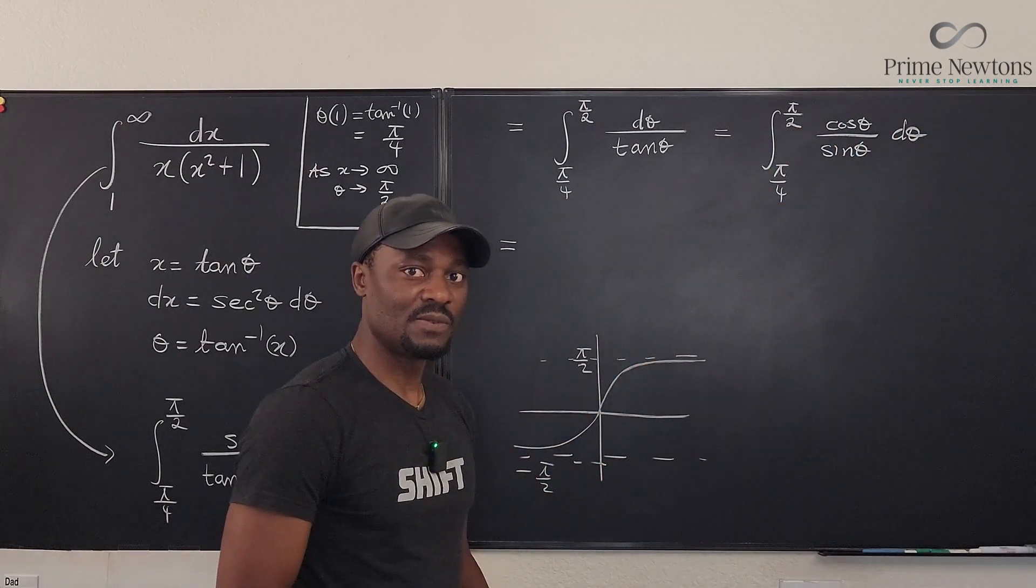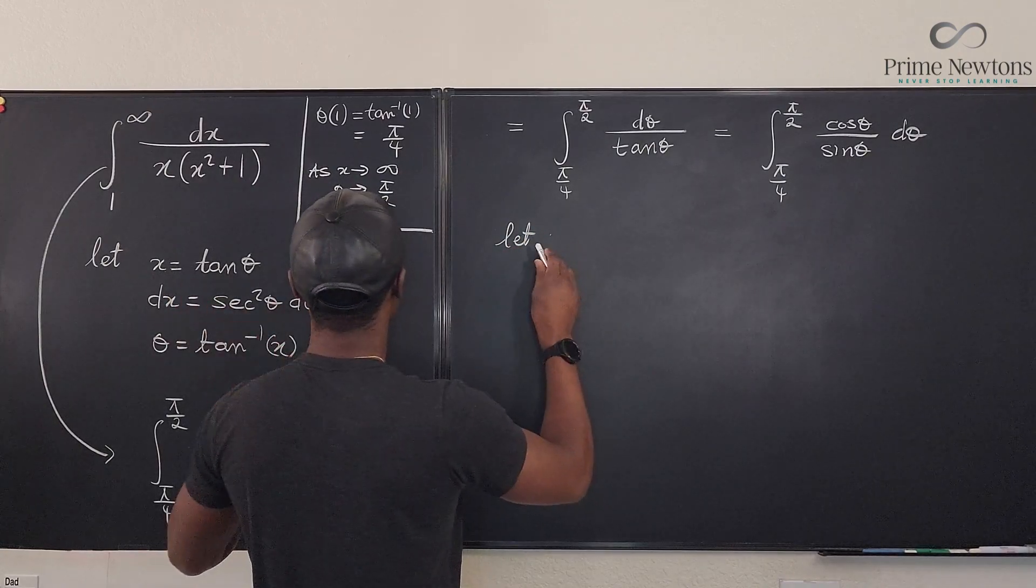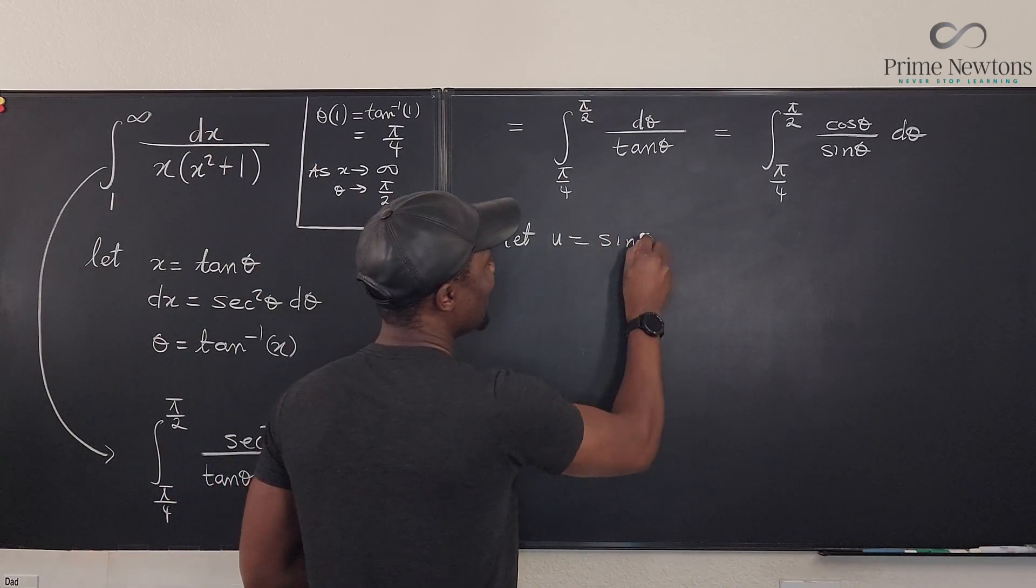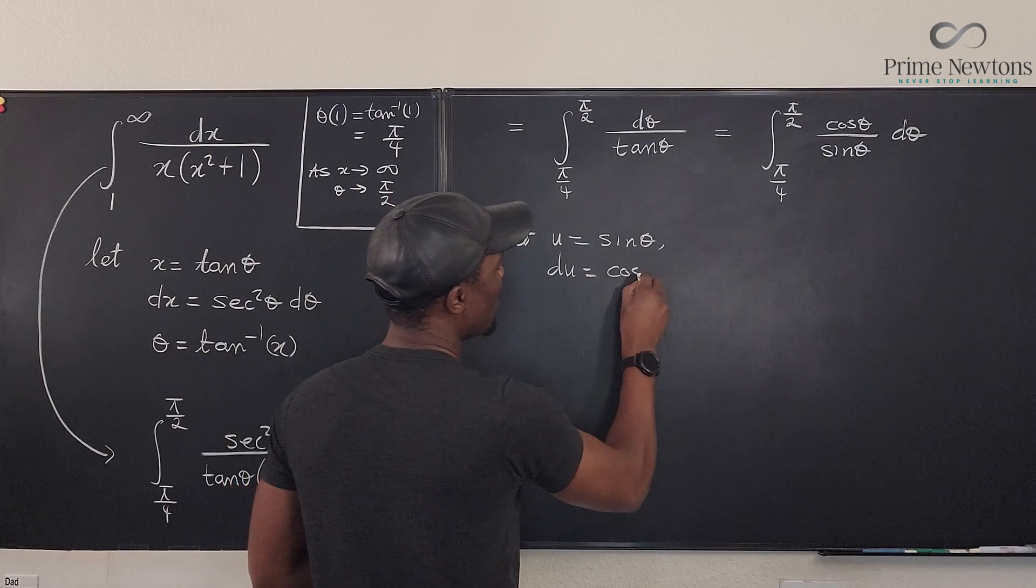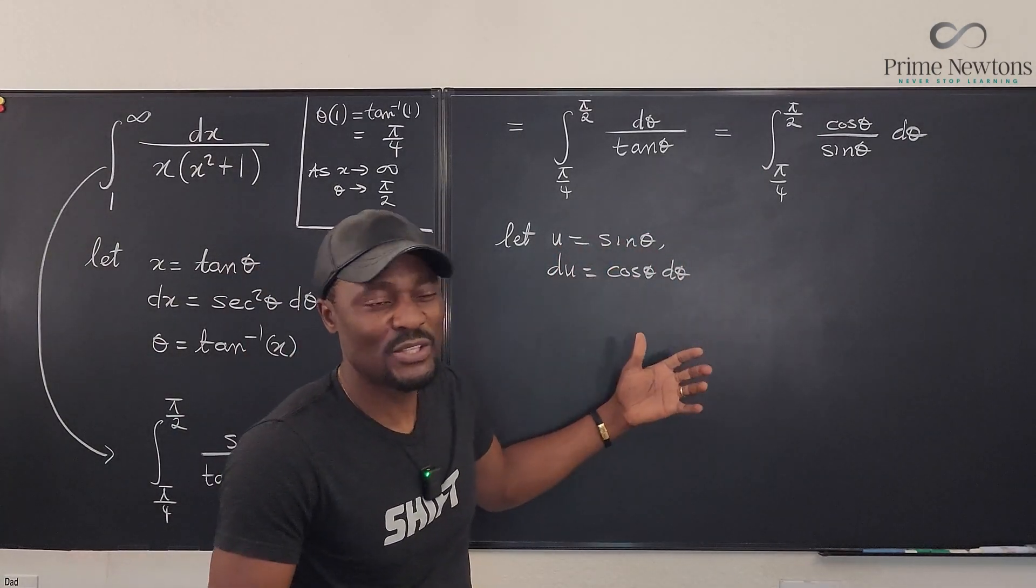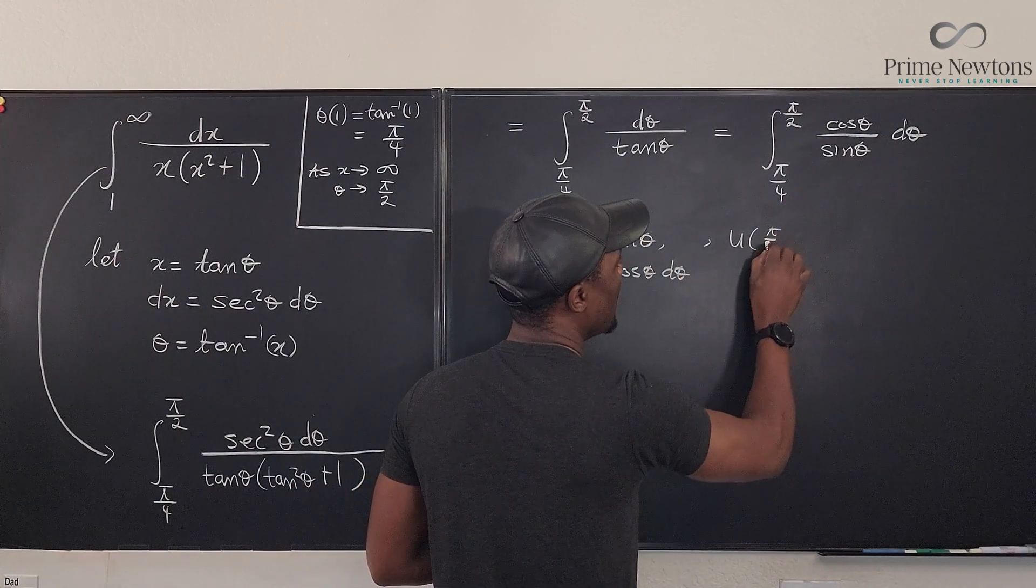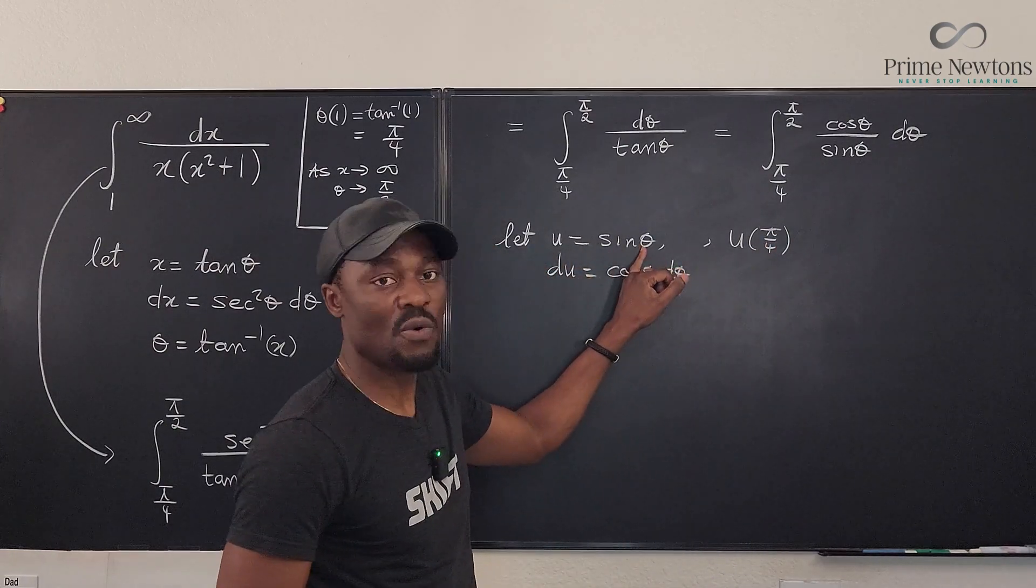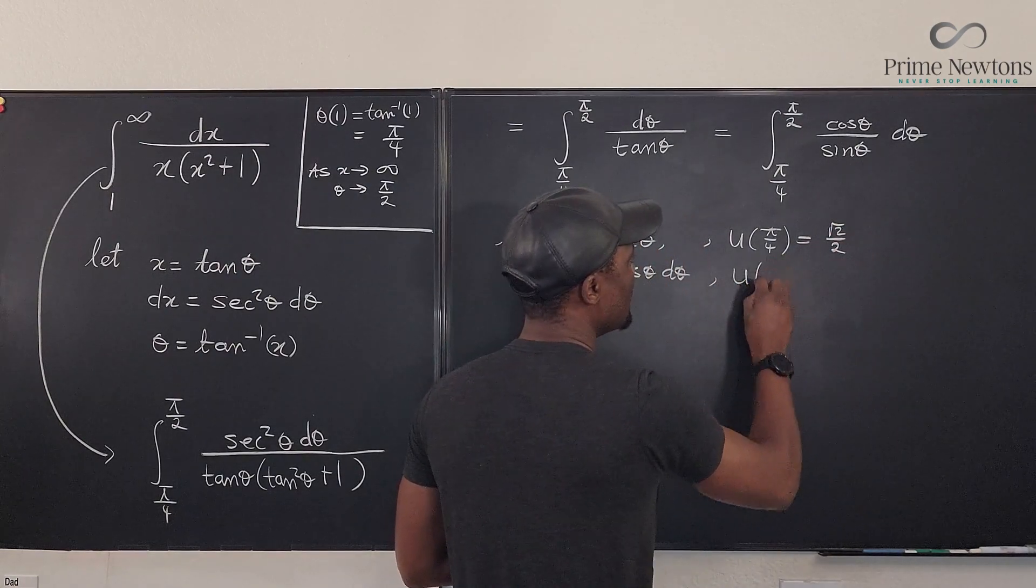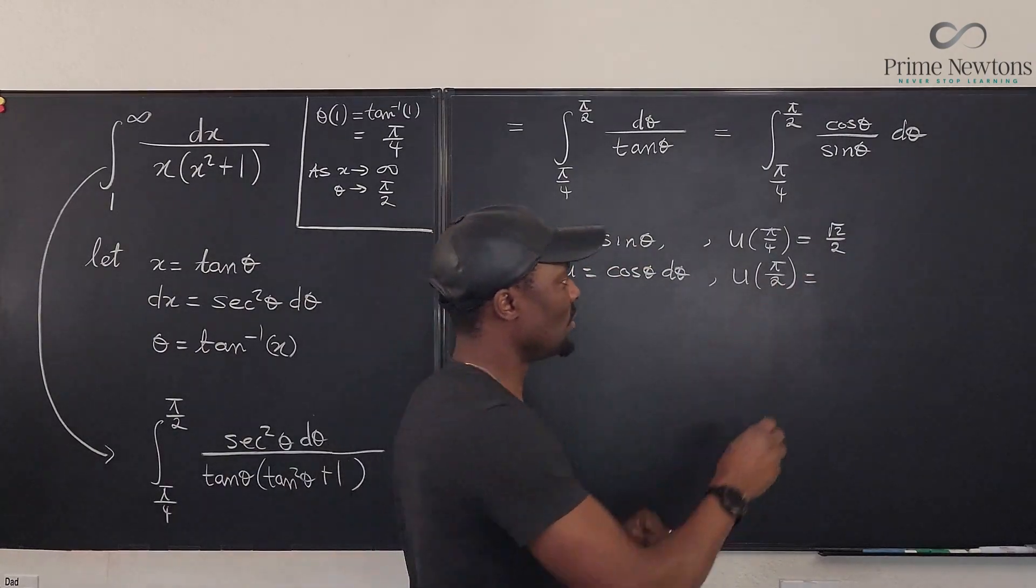Now, you can use u substitution for this one and you're good. Here I'll just do a quick u substitution. Let u be equal to sin θ. So we know that du is going to be equal to cos θ dθ. But now, because we have made a u substitution, I have to evaluate all the value, the boundaries. What would be the value of u at π over four? Well, the value of u at π over four will be sin π over four. That will be equal to √2 over 2. And the value of u at the upper boundary, which is π over two, will be equal to - what is sin π over two? It's one.